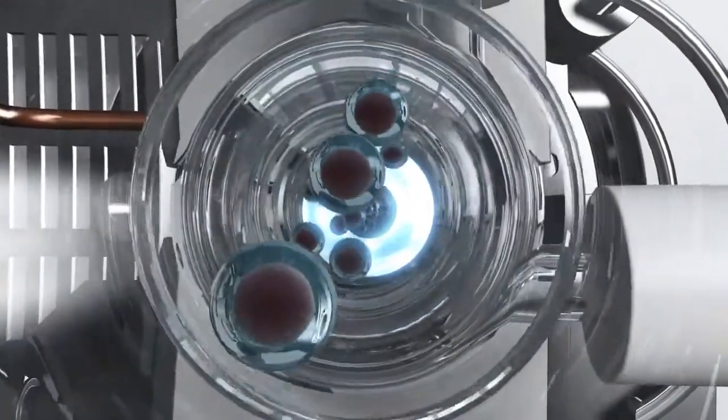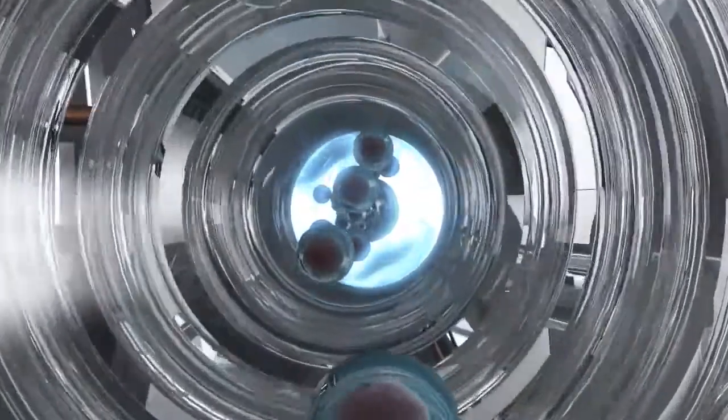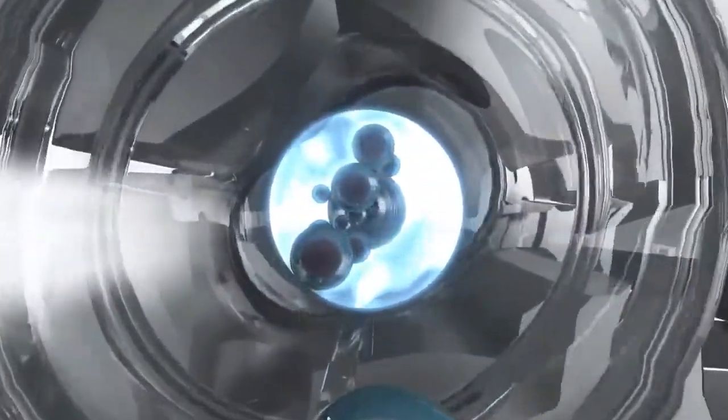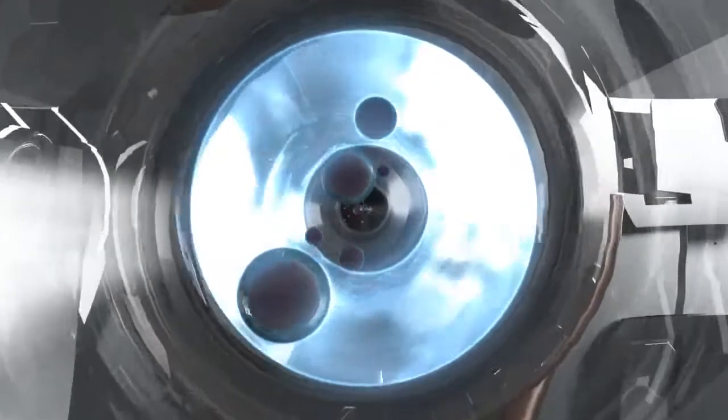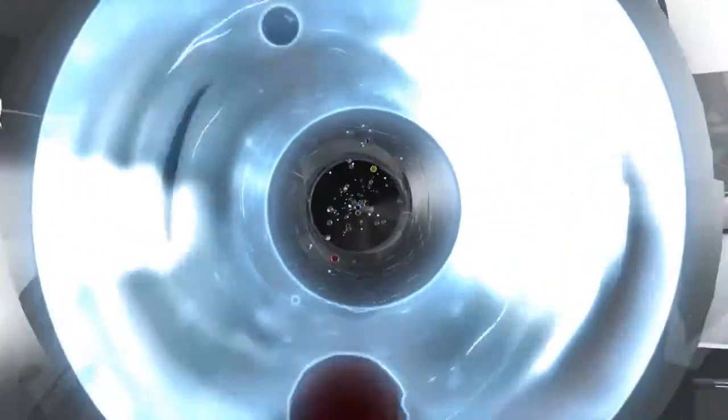From the spray chamber transfer tube, the small aerosol droplets are carried to the plasma torch, which features a 2.5 mm wide injector to ensure the droplets are dried, decomposed, atomized and ionized effectively.